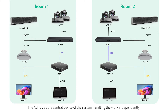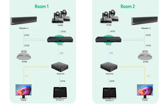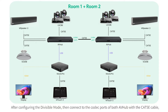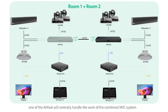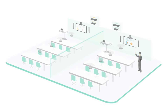The AV Hub is the central device of the system, handling the work independently. After configuring the divisible mode, connect the codec ports of both AV Hubs with a CAT 5E cable. One of the AV Hubs will then centrally handle the work of the combined MVC system.